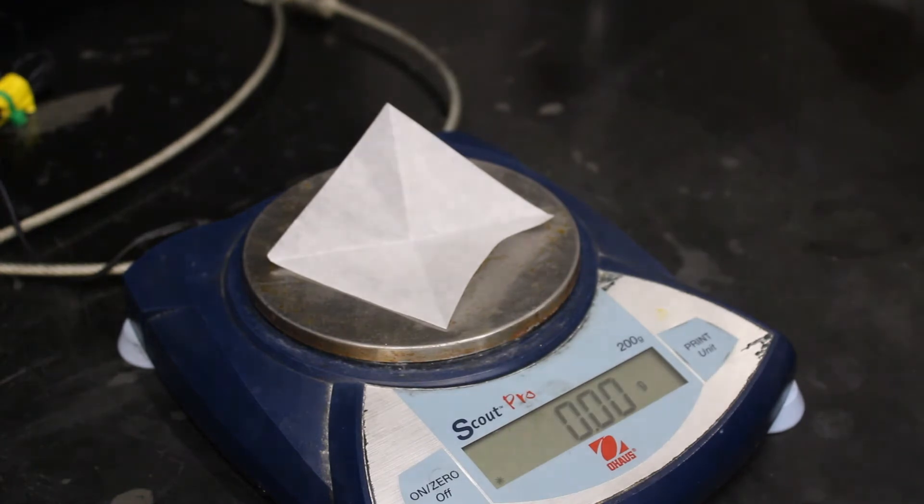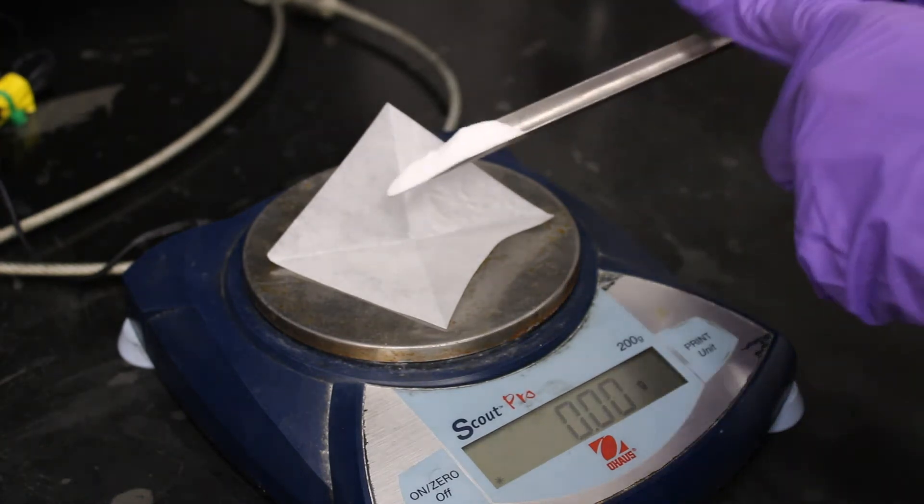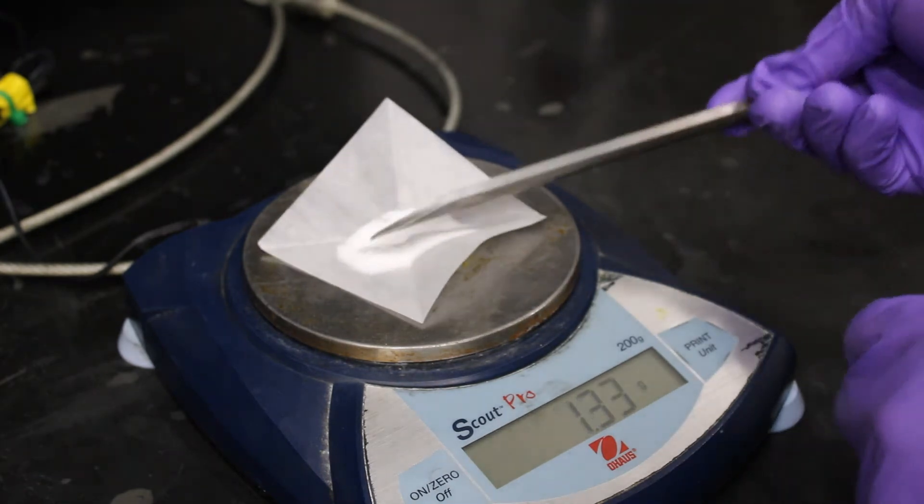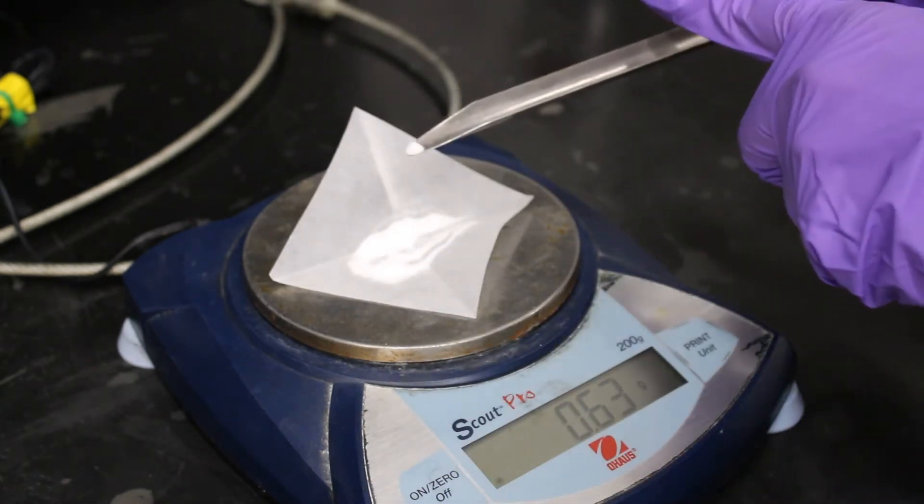Now measure out a sample of sodium bicarbonate using the weighing paper just like before. Refer to your lab manual for the mass needed for each run of the reaction.